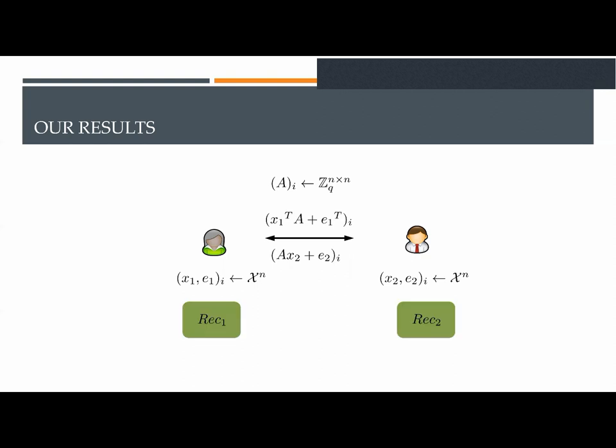Each party might then run a different reconciliation function, which we denote by REC1 for Alice and REC2 for Bob. In our model, the parties first exchange many LWE samples, and then they locally run their reconciliation function in order to compute the common key.